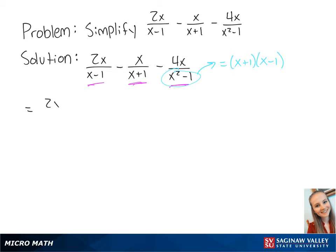So we're going to multiply 2x over x minus 1 by x plus 1 over x plus 1. Then we're going to multiply negative x over x plus 1 by x minus 1 over x minus 1. Then we have minus 4x over x plus 1 times x minus 1.